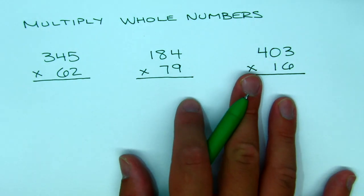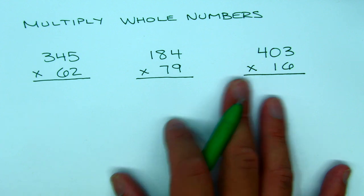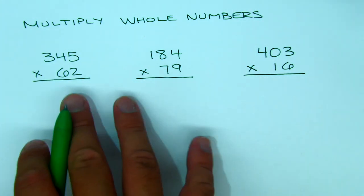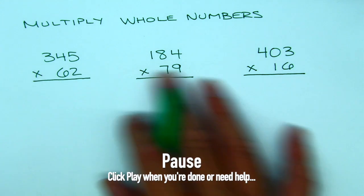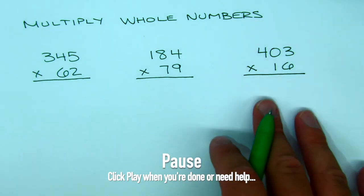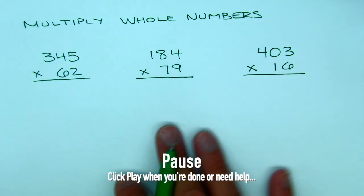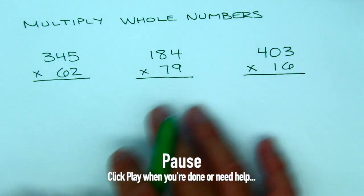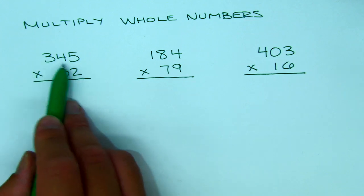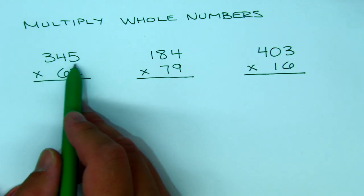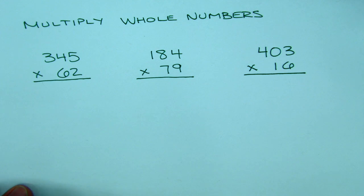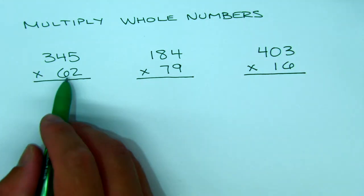Right now, pause the video, copy either the first one or all three, do them, and then when you're ready press play. All right, welcome back. We're going to start with 345 times 62.